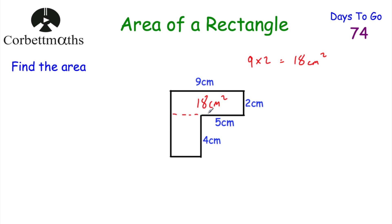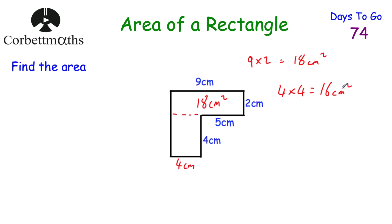For the bottom rectangle, the whole width of the shape is 9 centimetres and this part is 5 centimetres, so the width of the bottom piece is 4 centimetres. The bottom rectangle is 4 multiplied by 4, which equals 16 centimetres squared. For the whole shape, we do 18 plus 16, which equals 34 centimetres squared.